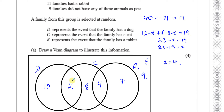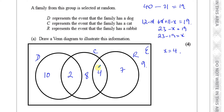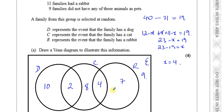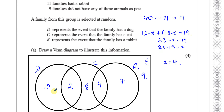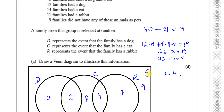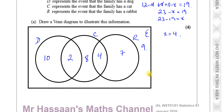Now let's verify we're correct. There should be 12 in the dog circle — 10 plus 2, correct. There should be 14 in the cat circle — 8 plus 2 plus 4, correct. There should be 11 in the rabbit circle — 7 plus 4, correct. And 9 outside. They should all add up to 40: 10 plus 2 plus 8 plus 4 plus 7 plus 9 equals 40. So we've got the correct diagram.